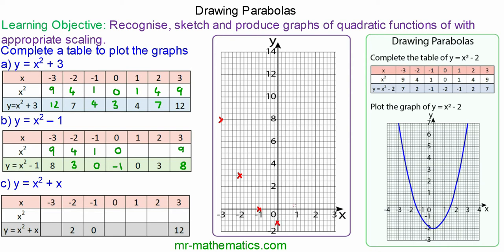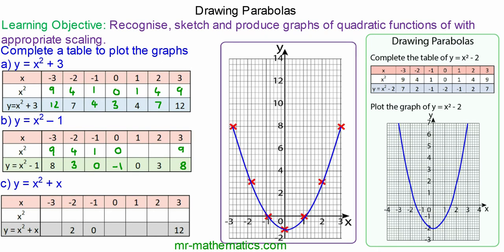When x is 1, y is 0. When x is 2, y is 3. And when x is 3, y is 8. Again when we draw the graph through the points, it should be a smooth curve passing through the turning point of 0 negative 1.